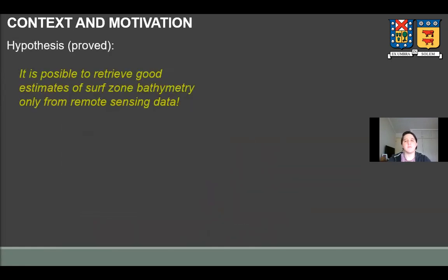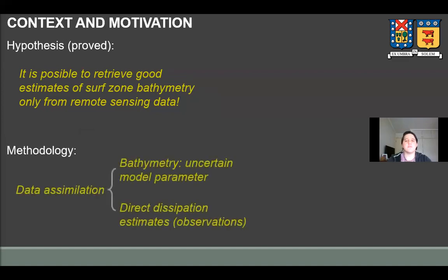In this work, we demonstrate that it is possible to retrieve good estimates of surf zone bathymetry, including sandbars and rip channels, only from remote sensing data. For this purpose, we introduce a data assimilation approach where bathymetry is treated as an uncertain model parameter, and where direct dissipation estimates are used as the only data source. So, if you are still with me, in the following, I will briefly talk about our methods, and then we will jump to see some more details of the results.